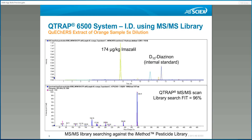And one example where we identified a pesticide, imazalil, in an orange extract. We identified this compound with very high confidence based on MSMS library searching.